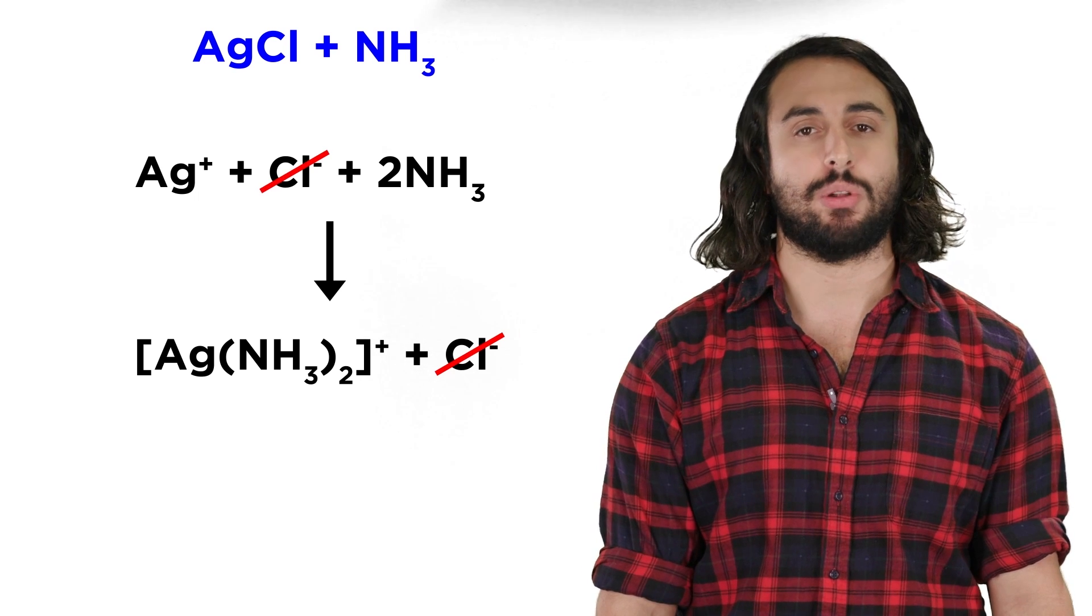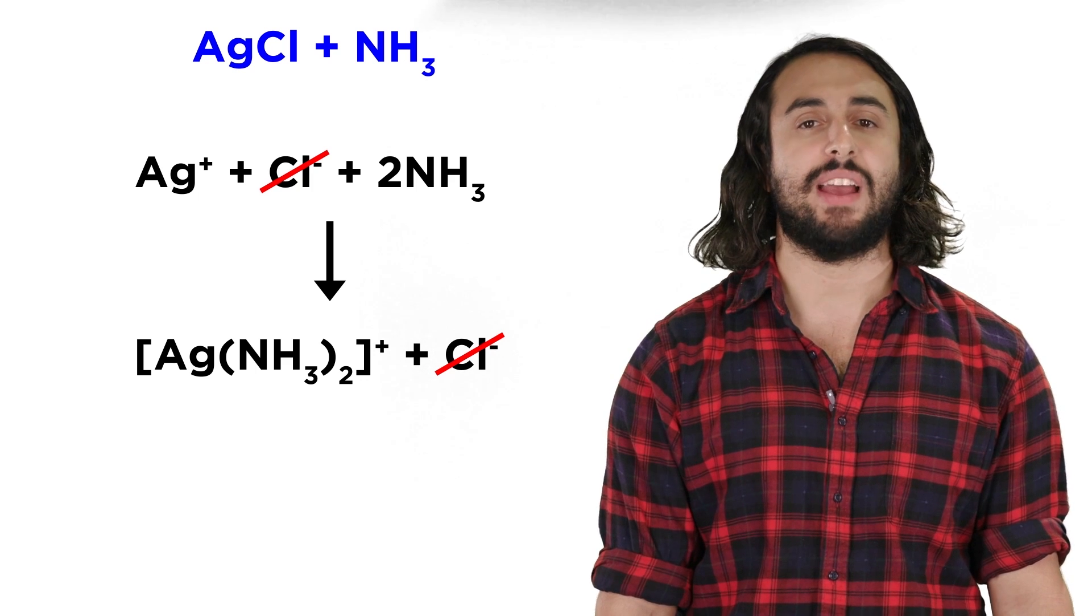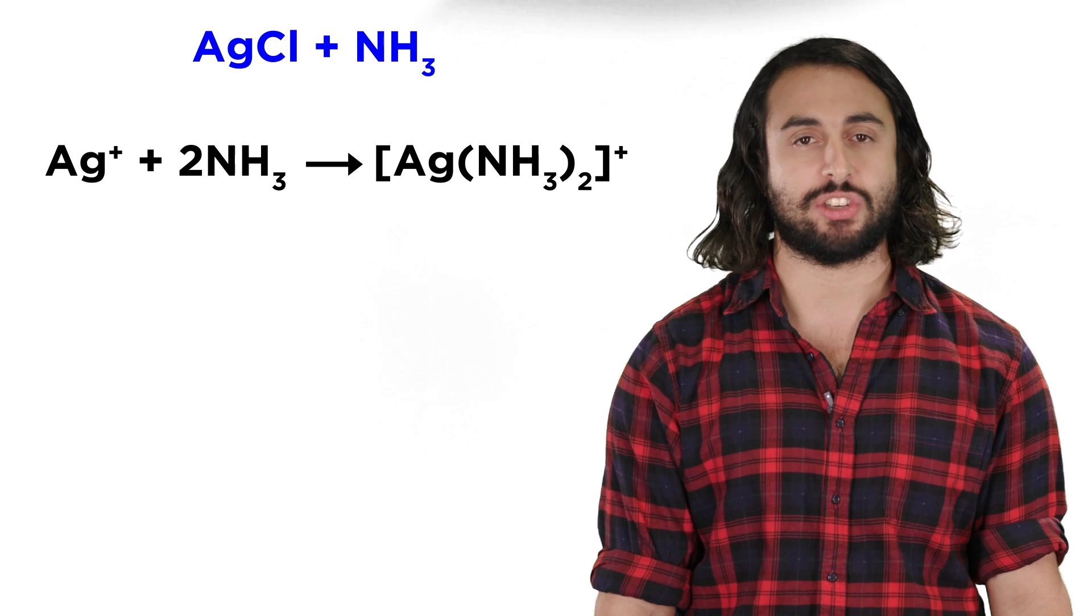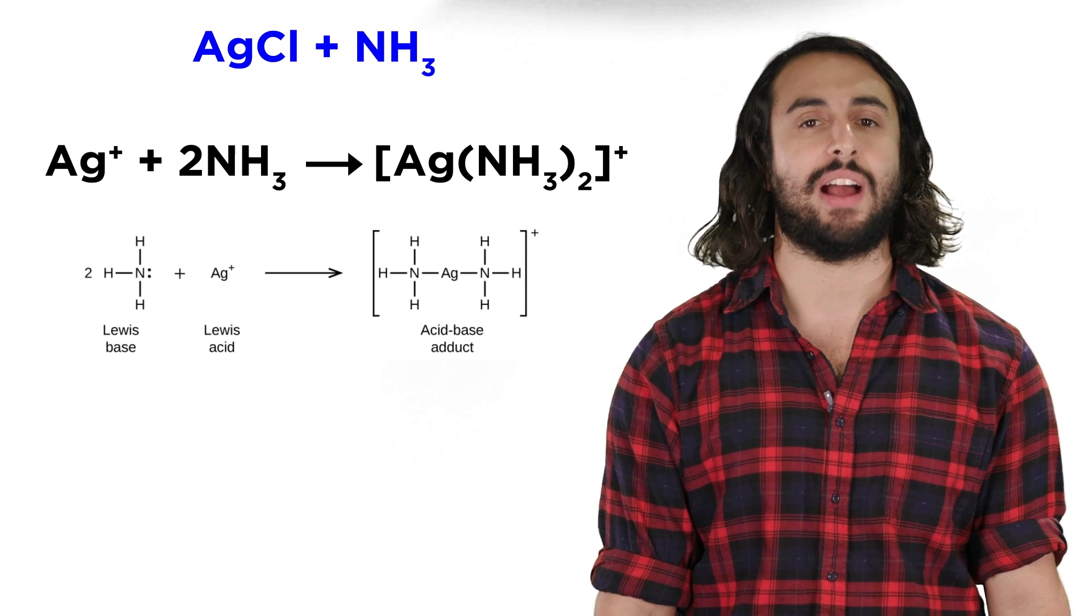we can cancel out the chloride ions from both sides, as this will be a spectator ion, which leaves us with the following net ionic equation, which exclusively shows the formation of the ion.